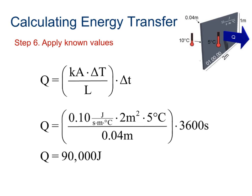So now, looking at this, we've got our equation. We have all of our knowns. We're just plugging them in. Our k is that constant, 0.10 joules per second meter degree Celsius. We've got our area, which is 2 meters squared. Our temperature change, which is 5 degrees Celsius. Our depth, or that distance of the thickness, is 0.04 meters. And then, multiplied by our time, it's going to give us 90,000 joules.